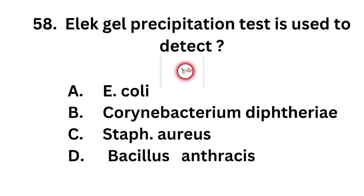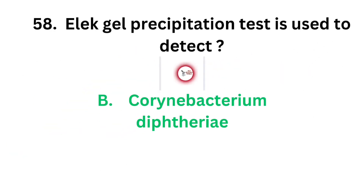Question number 58. Elek gel precipitation test is used to detect: Option A: E. coli. Option B: Corynebacterium diphtheriae. Option C: Staphylococcus aureus. Option D: Bacillus anthracis.